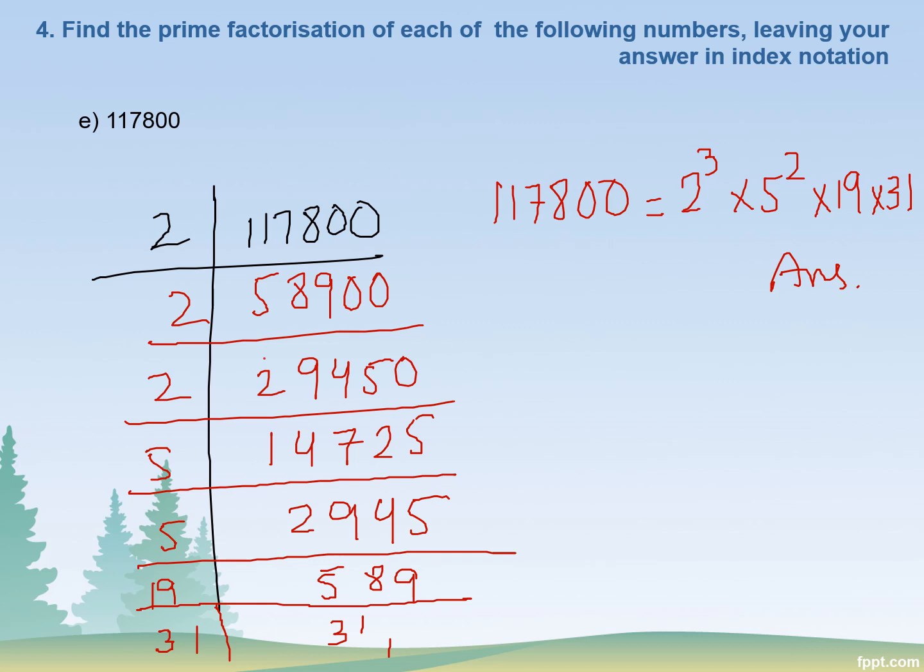This is how you solve for prime factorization of numbers and write them in index notation. It's not tough — you only need to know division of numbers and also some knowledge about prime numbers, because you are always dividing these numbers with prime numbers. Thank you for watching the video. If you like the video, please subscribe to my channel and share with your friends. Please take care of yourselves.